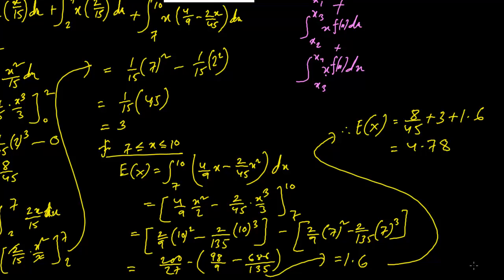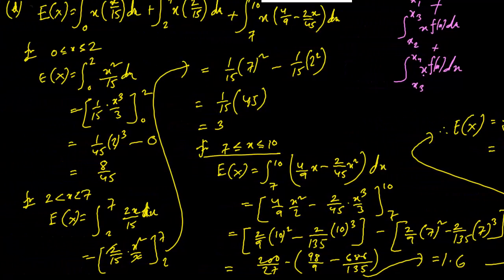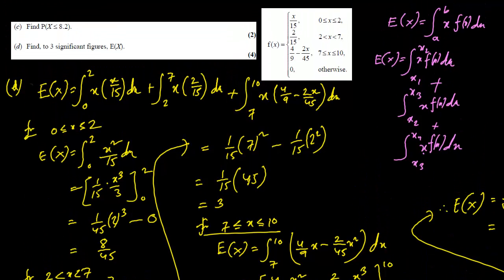It is extremely important to use the correct answer format: the answer must be expressed to 3 significant figures, otherwise the accuracy mark will be lost. So the final answer is 4.78, which is already 3 significant figures.